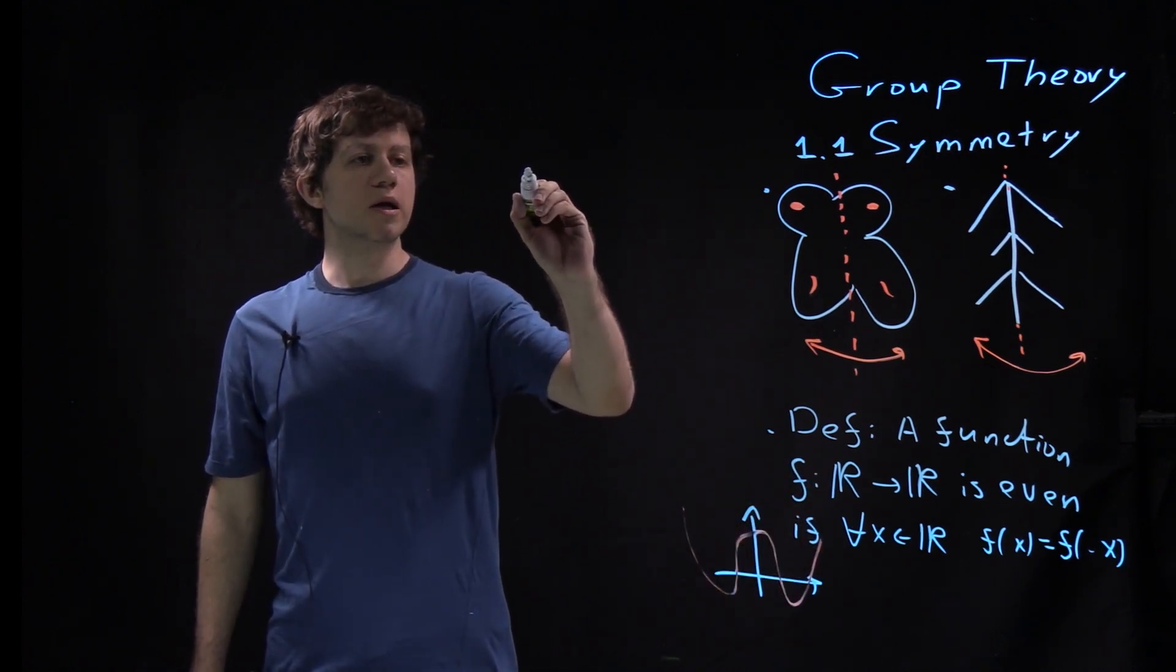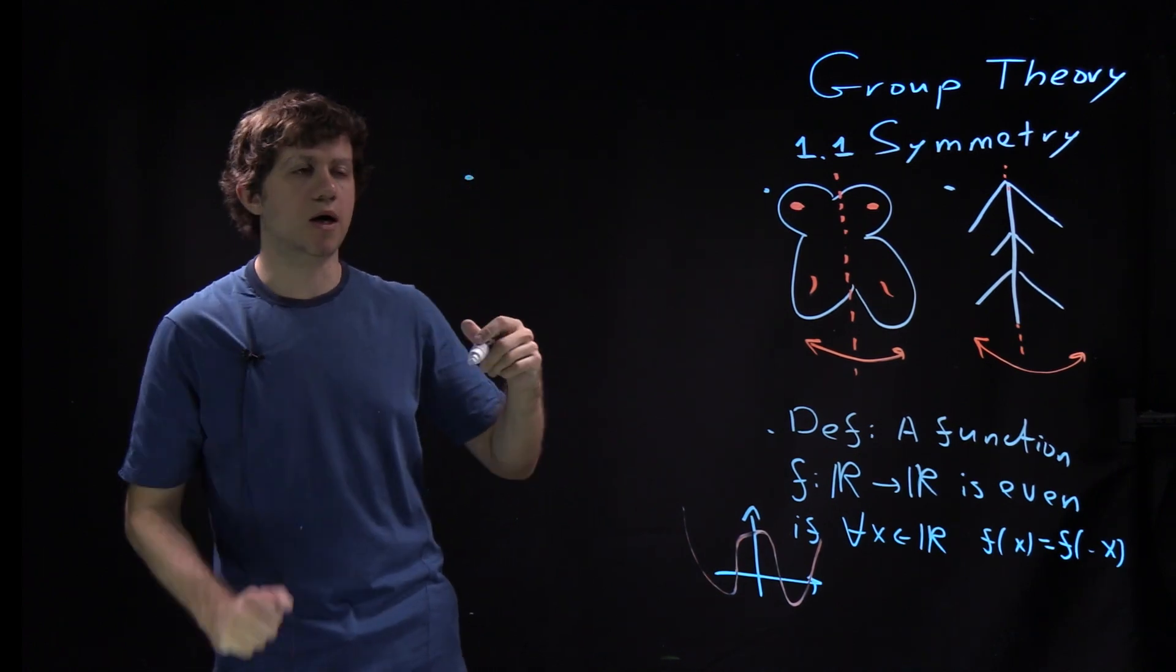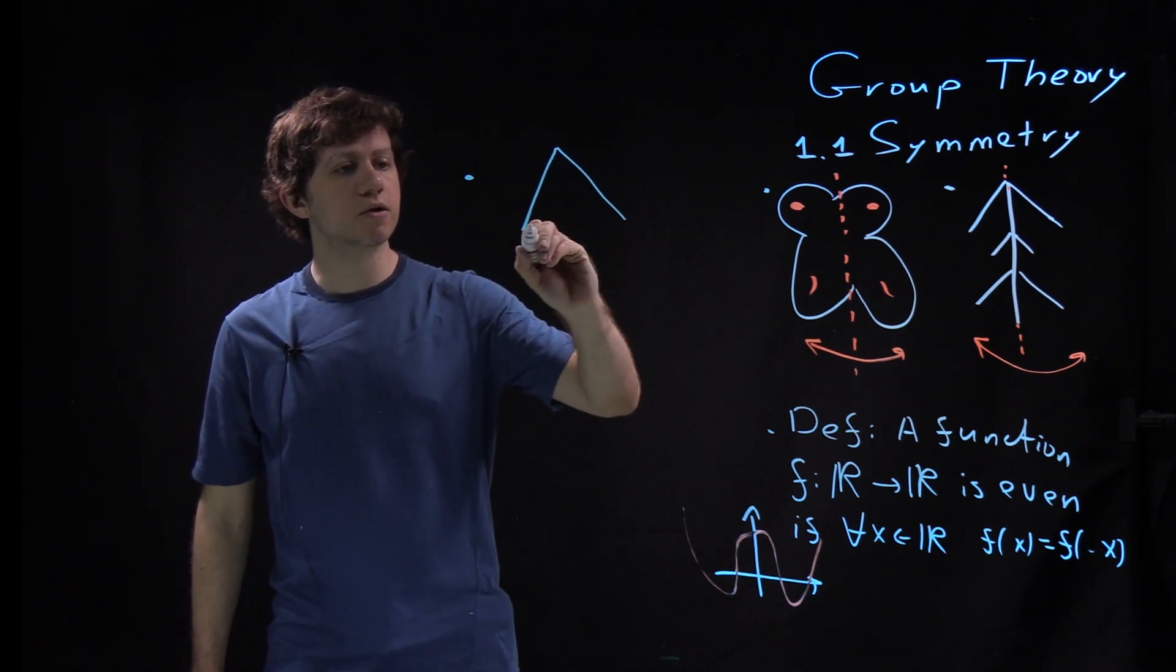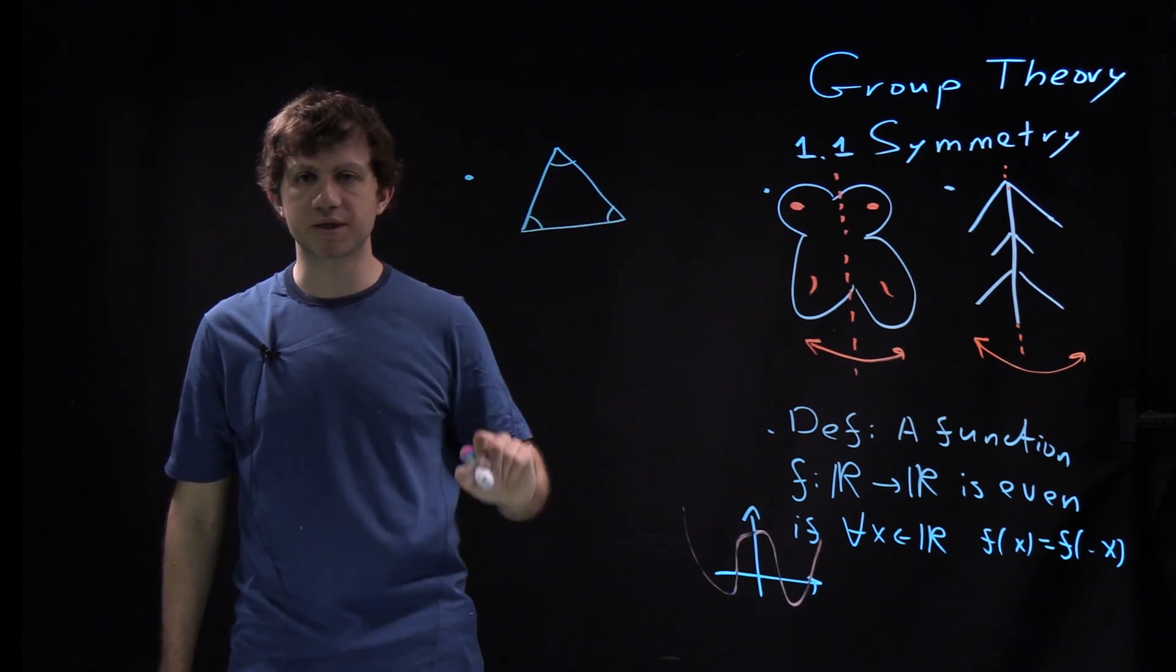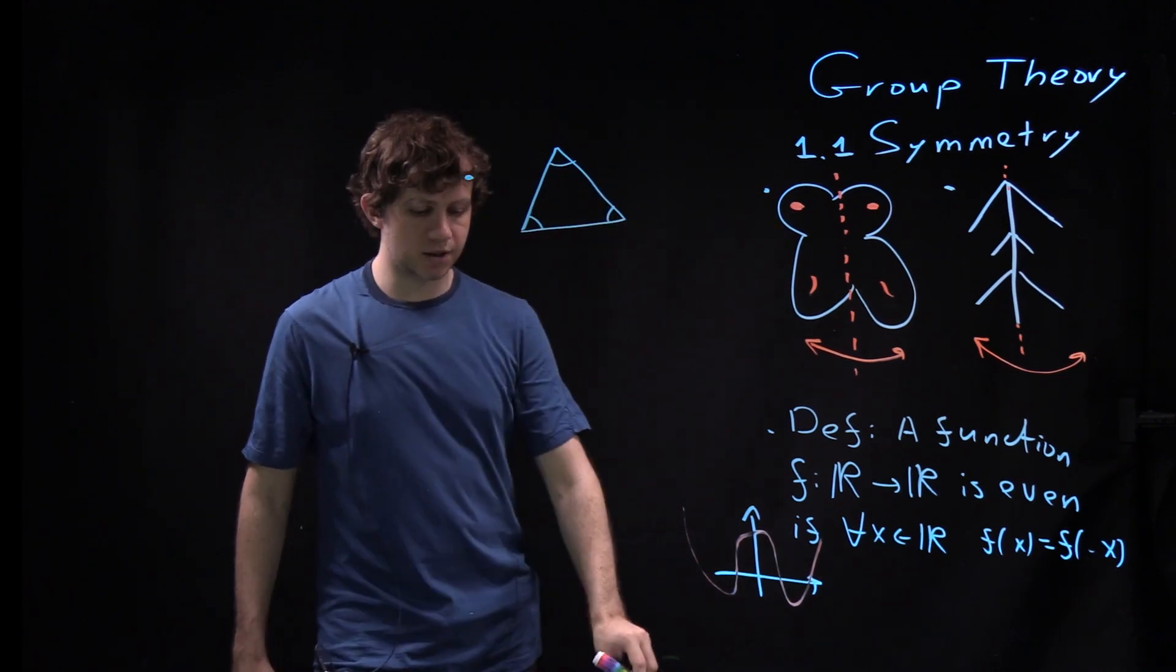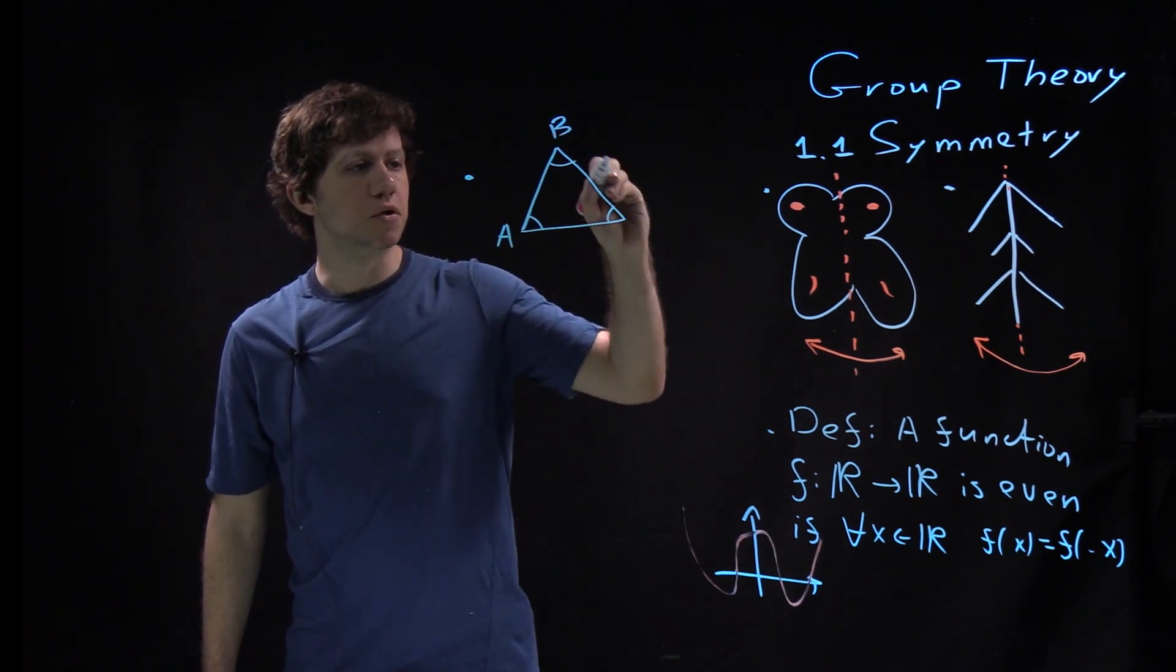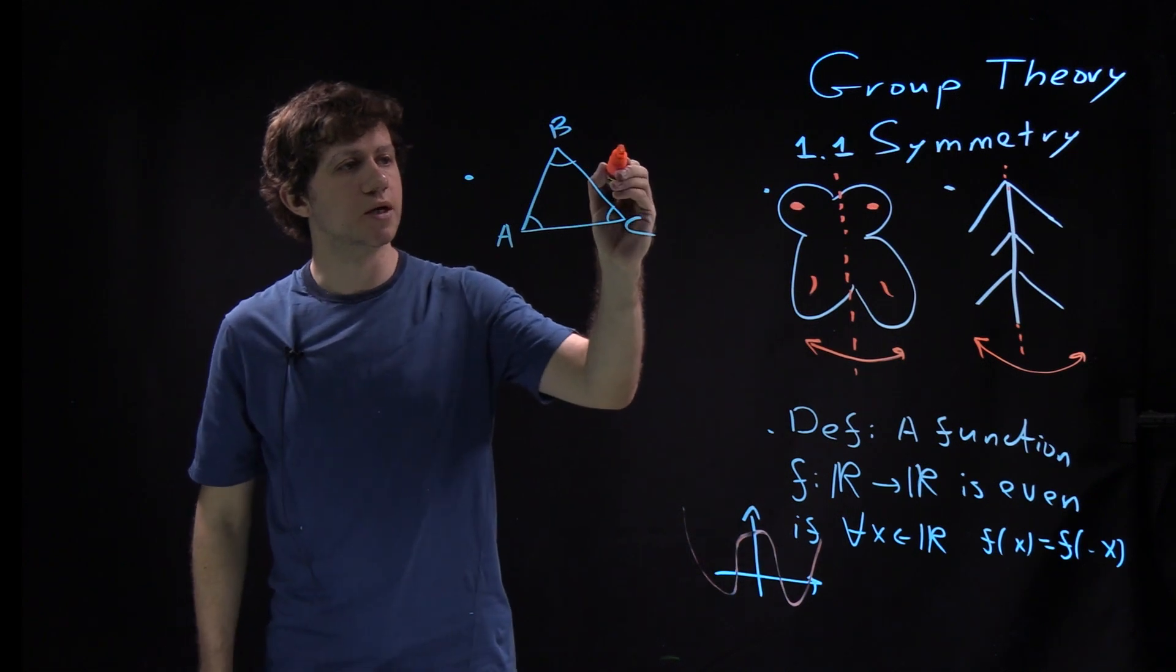Let's look at something with a richer pattern of symmetry. A much more involved example is a triangle. I take a regular triangle—and that's important—it has all these angles being π/3. And this triangle, which we denote by ABC, has a much richer symmetry.